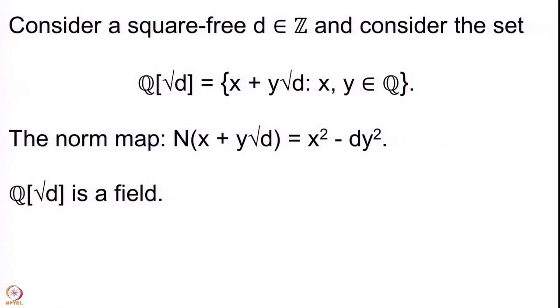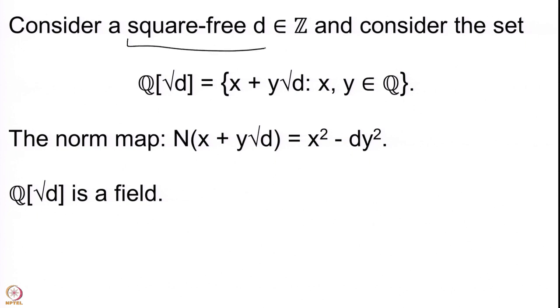Welcome back. We are studying the quadratic extensions of Q and what are called the units in Q(√D). The quadratic extensions of Q, defined in the last lecture, are the sets Q(√D) where D is a non-square natural number. We often take D to be square-free, because when we take elements of the form x + y√D it is enough to take Ds which are square-free — meaning no square divides D.